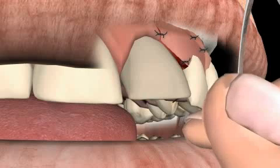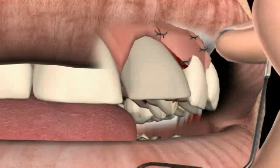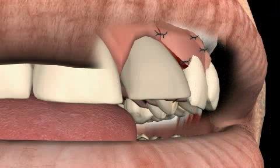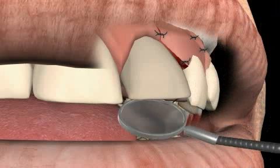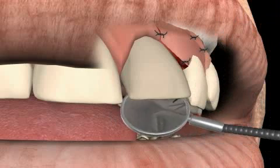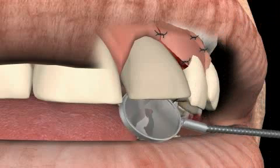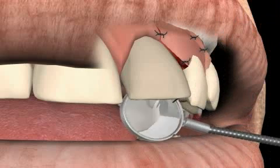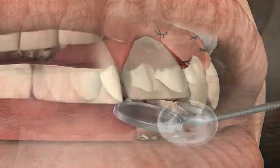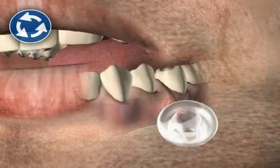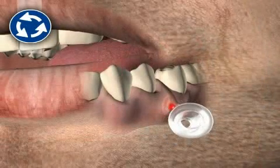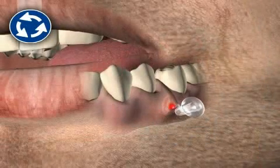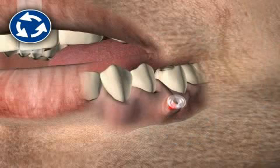Twice yearly x-ray checks will confirm if the treatment was successful or not. You can find out more about the removal of cysts in the video entitled Cystectomy. An alternative to this operation could be the opening of the cyst first. You can find out more in the video entitled Cystostomy.